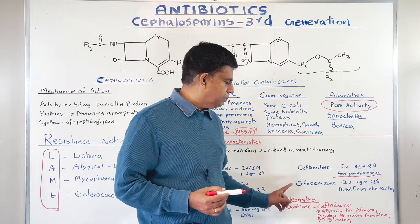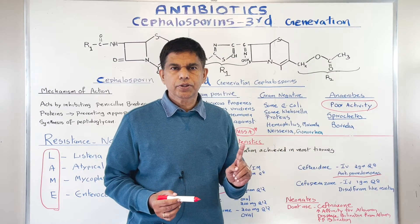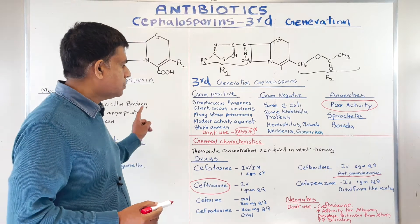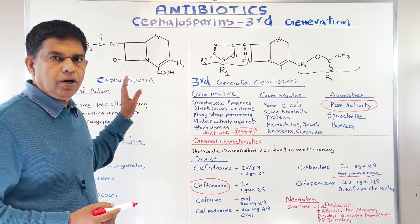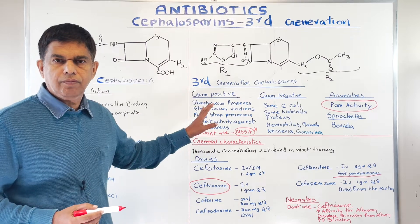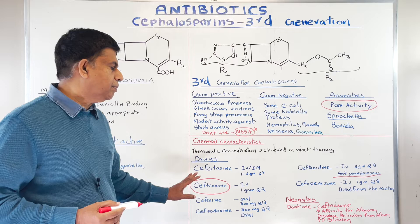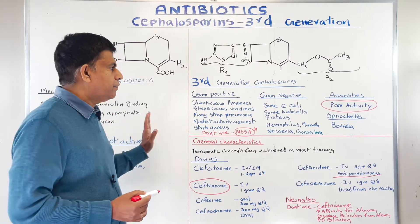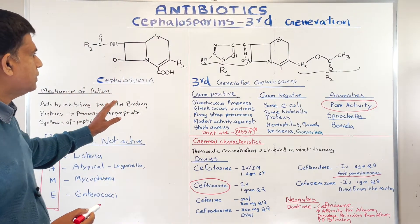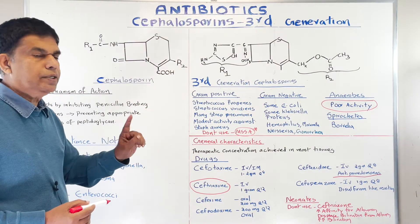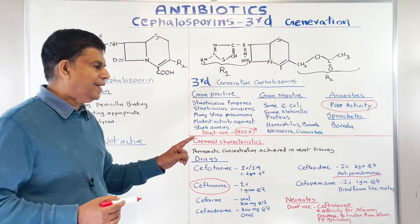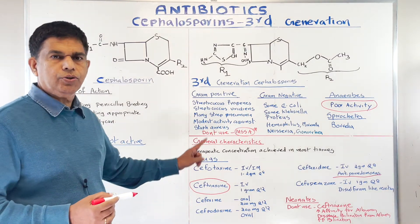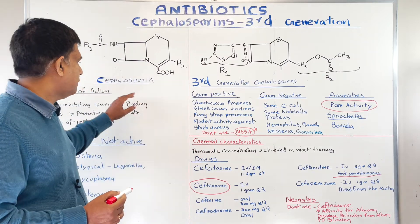Remember the most important point about ceftriaxone in neonates: don't use it — it displaces albumin from bilirubin and increased bilirubin can go up. In a nutshell, everything we covered about third generation cephalosporins: the most important drug we use is ceftriaxone. It does not have any activity against anaerobes. Among third generation cephalosporins, we do have some pseudomonas activity — ceftazidime is the drug of choice for pseudomonas. And always remember ceftriaxone in neonates can cause increased bilirubin.